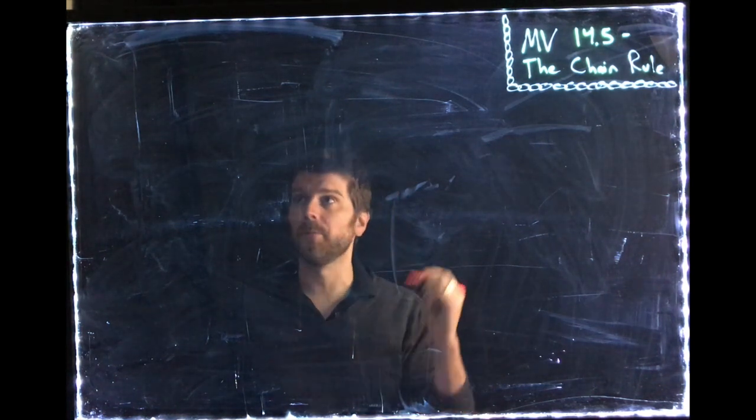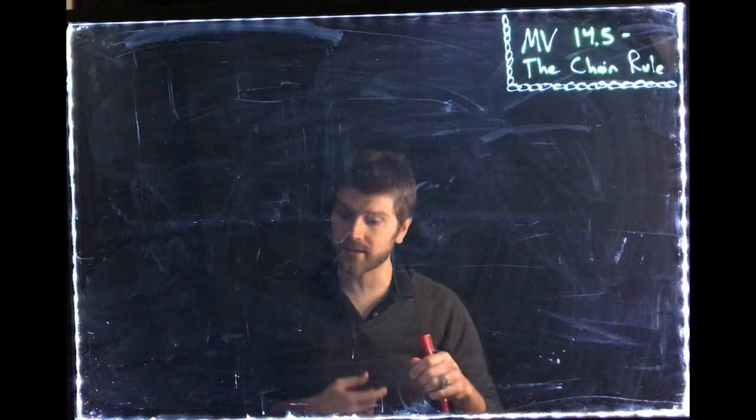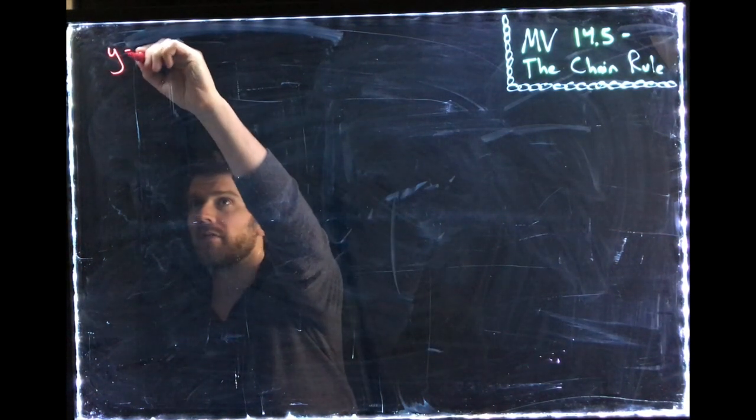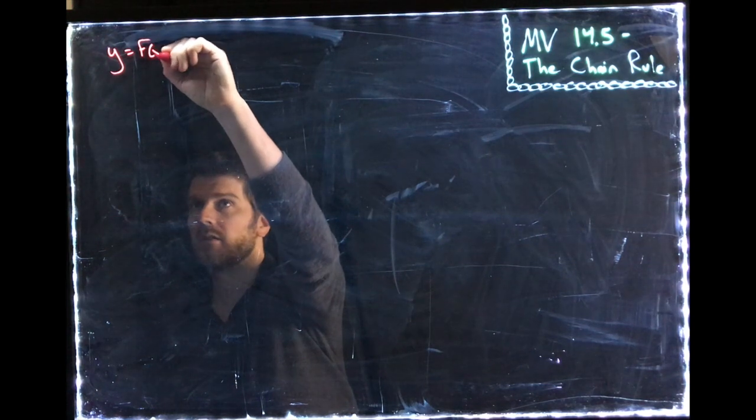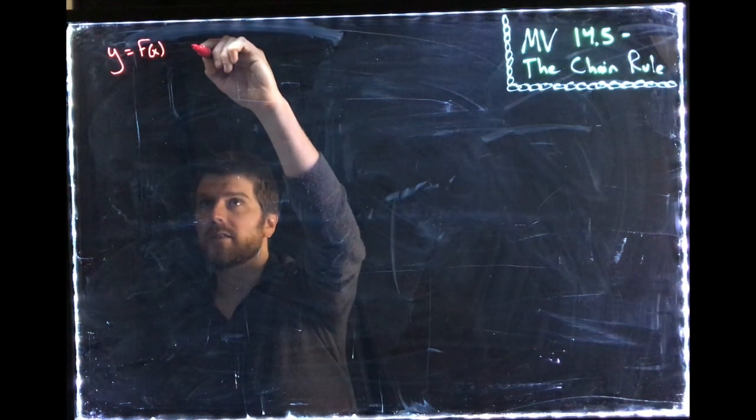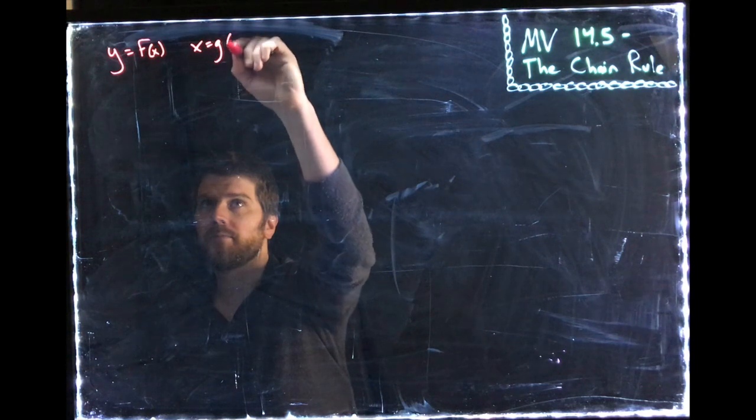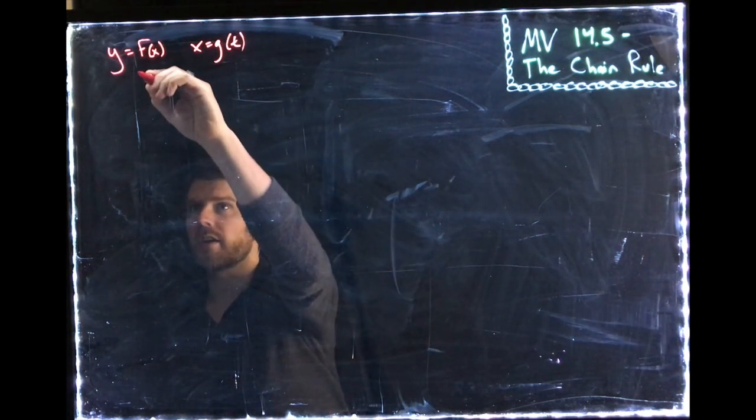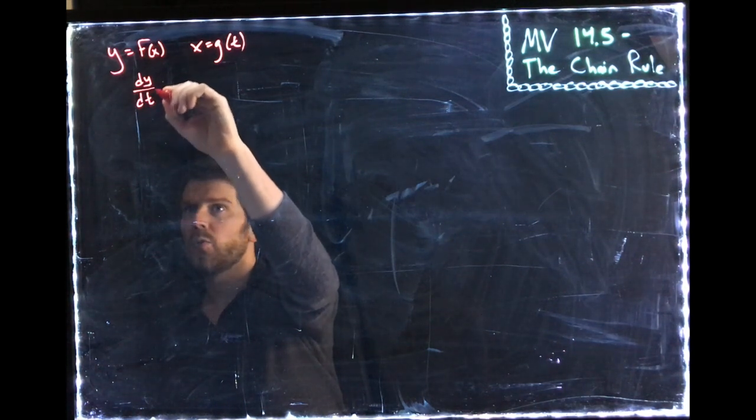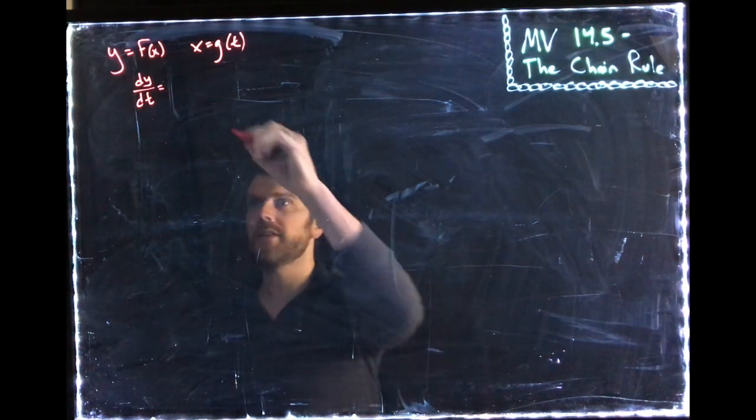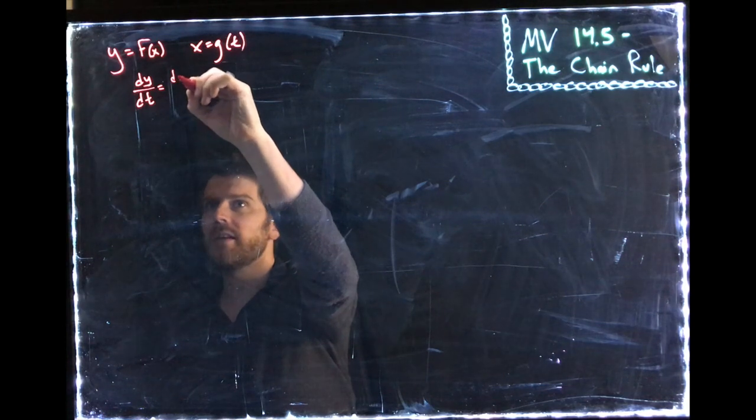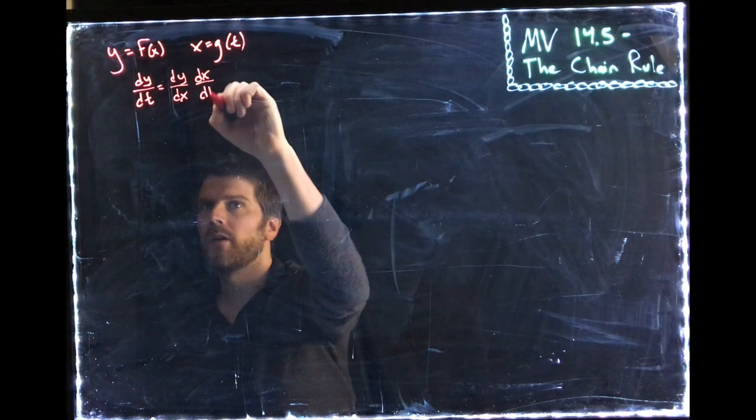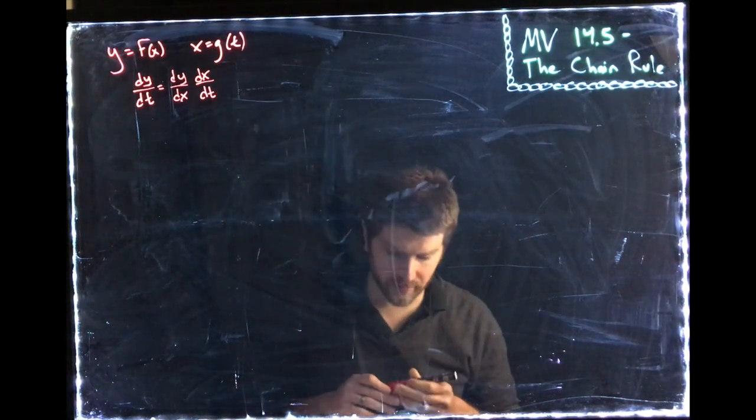So the chain rule, you might recall, is a way of connecting things that depend on different variables together. So the classic example is if we have y equals f of x, y depends on x, and x depends on some other variable t, well, then I can put these together. I can do dy/dt. How does y depend on t? y depends on t through x. dy/dx times dx/dt. So that's the good old fashioned chain rule.